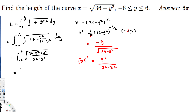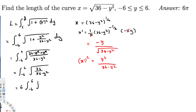We're left with the integral from -6 to 6 of √(36/(36 - y²)) dy. Since 36 = 6², we can take the square root and bring 6 outside the integral, giving us 6 times the integral from -6 to 6 of 1/√(36 - y²) dy.